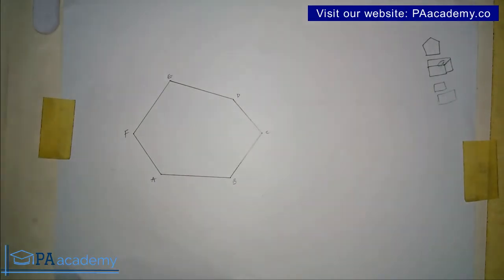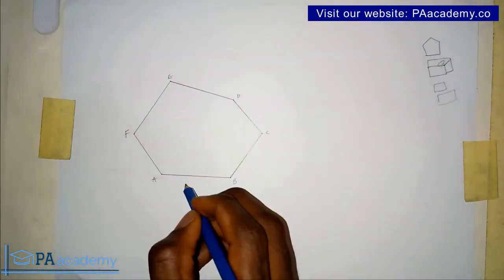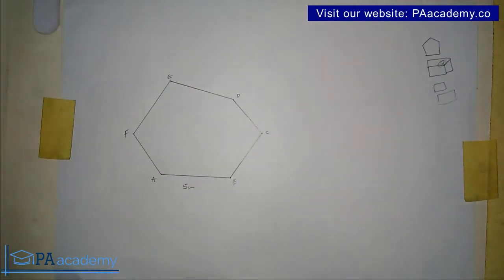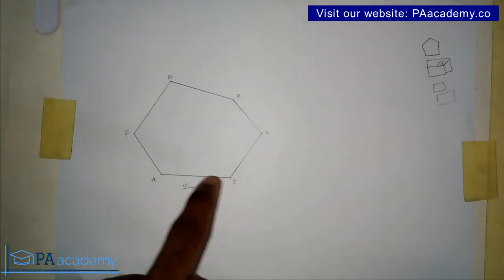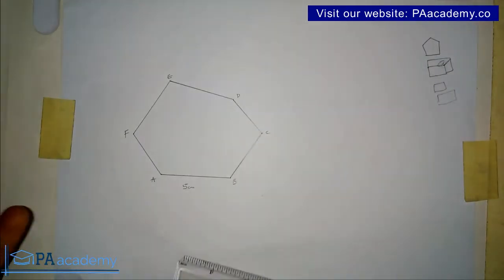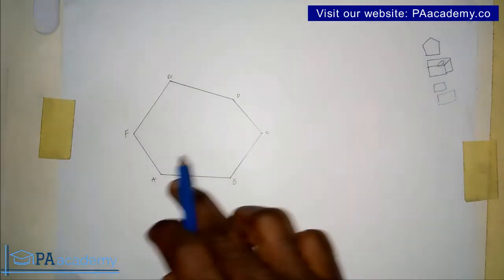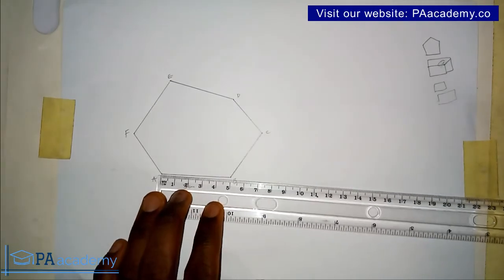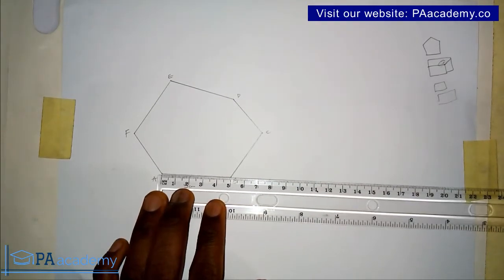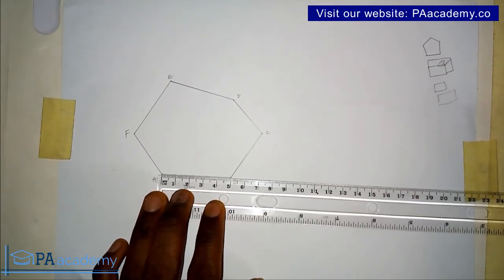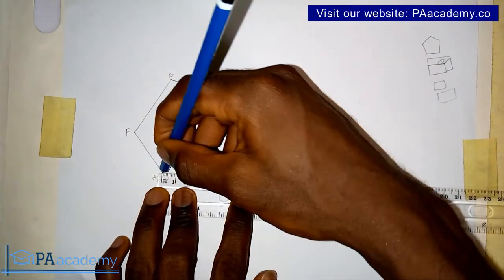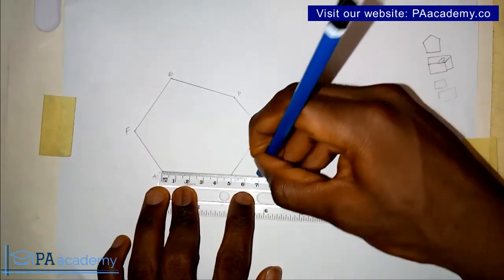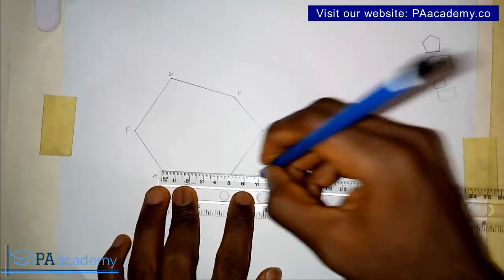Let's call the vertices A, B, C, D, E, and F — so this is a six-sided hexagon. This side AB is five centimeters. If you are asked to draw a similar polygon but AB should now be seven centimeters instead of five, what you do is pick line AB and extend it by adding an additional two centimeters to make it seven.